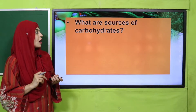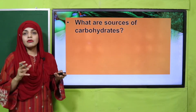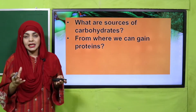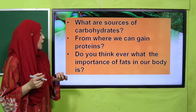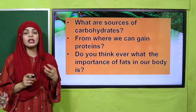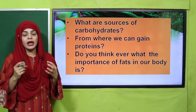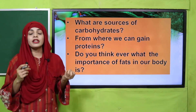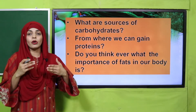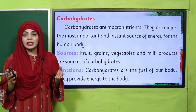Some pre-reading questions: what are the sources of carbohydrates? Milk, grains, wheat, and rice — these all have carbohydrates in them. Where can we gain proteins? Meat is a great source of proteins. Do you think about the importance of fats in our body? Fat keeps our body warm and stores energy. If you have a deficiency, the energy stored in the body is used.